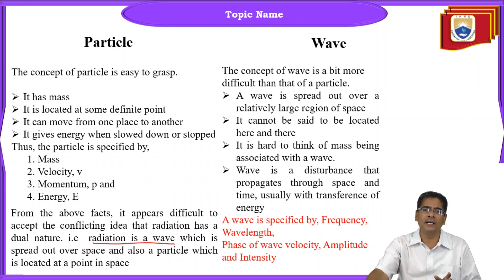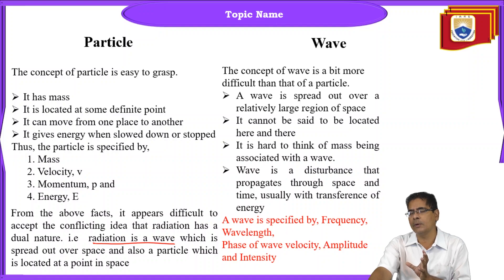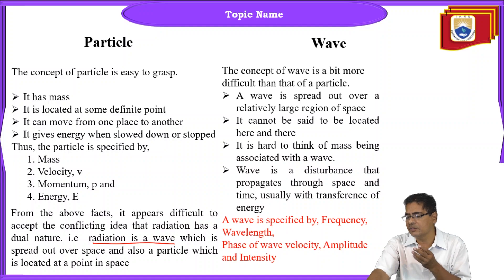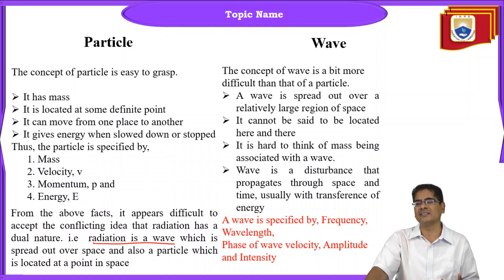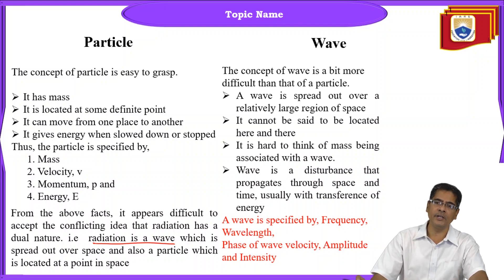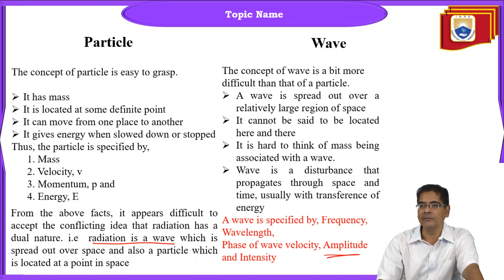The differences between a particle and a wave can be understood by their characteristics. A particle has mass, velocity, momentum, and energy. A wave is characterized by frequency, wave number, wave velocity, amplitude, displacement, and intensity. The amplitude of a wave is the maximum displacement traveled by the wave — plus A in the positive direction and minus A in the negative direction.